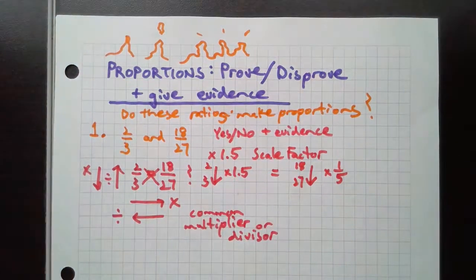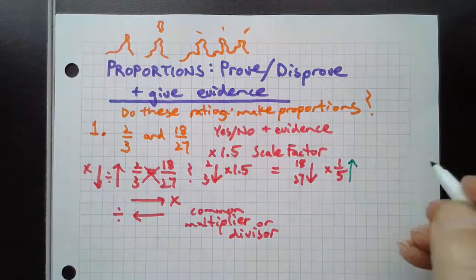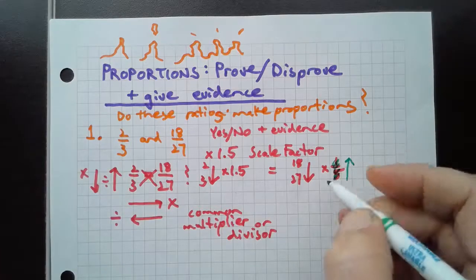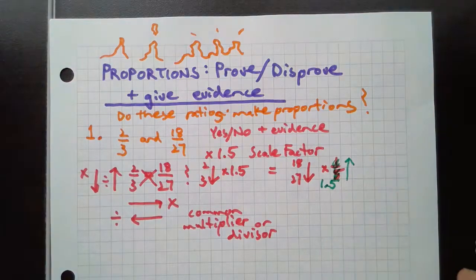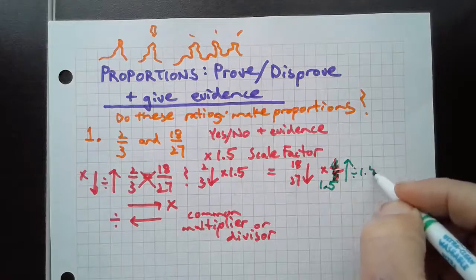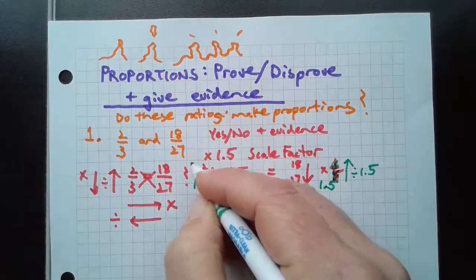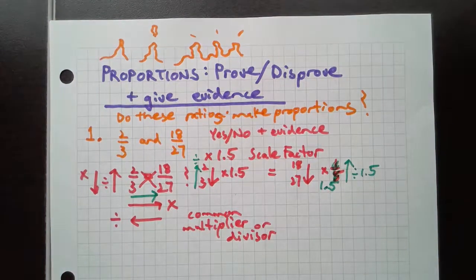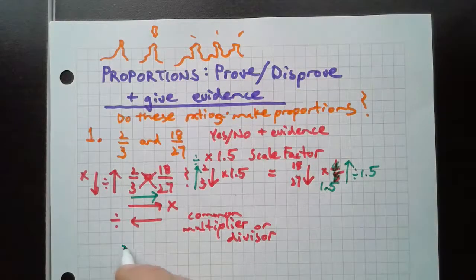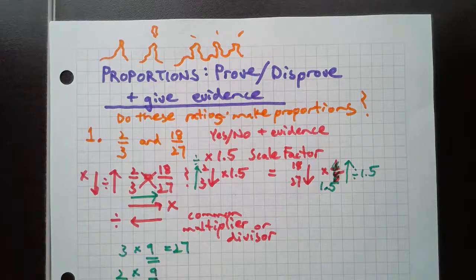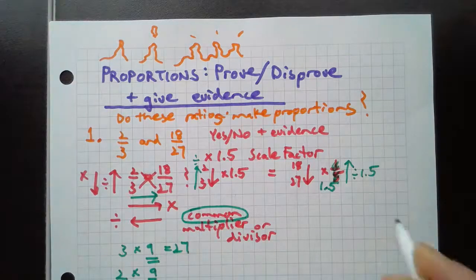But if I go bottom to top, that's 1.5. If I go the other way and divide, then I'm dividing by that same factor. But if I go across, am I still using 1.5 as a scale factor? No, right? 3 times 9 is 27, same as 2 times 9. There's my common multiplier, my scale factor.